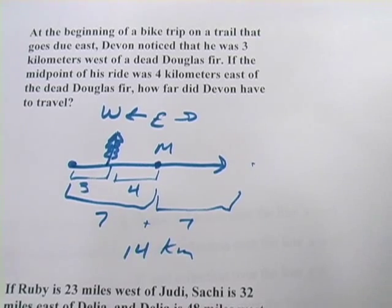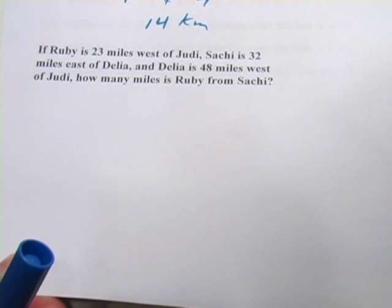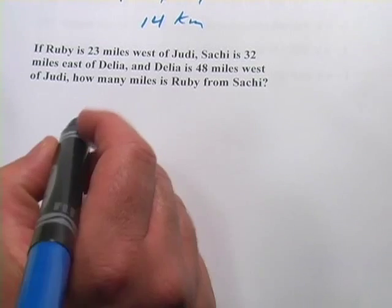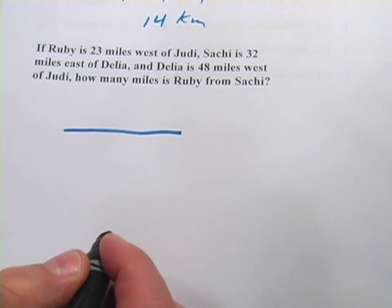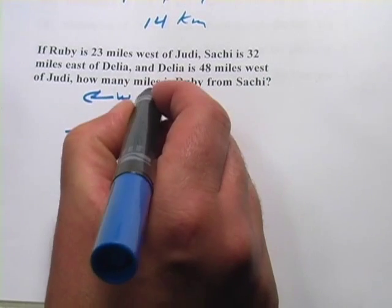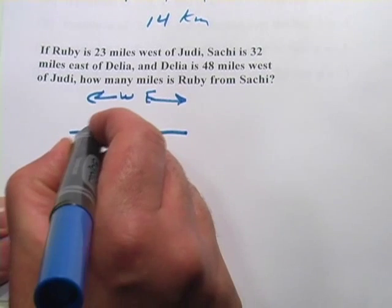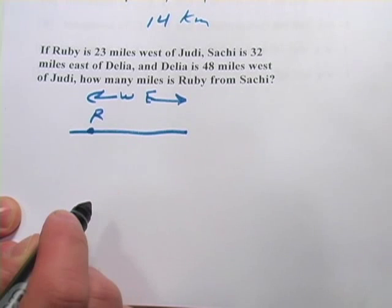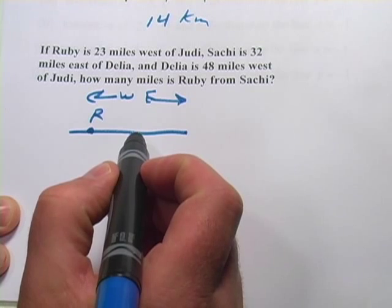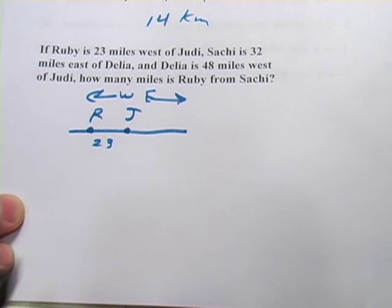So this is simply 14 kilometers that Devin has to travel. It gets pretty easy once you draw a picture. Let's look at one more — this is a particularly tricky kind. It says, if Ruby is 23 miles west of Judy. Let's draw a little trail here. West is that way, east is that way. Ruby is 23 miles west of Judy, so let's put Judy in here and we'll call that 23 between them.